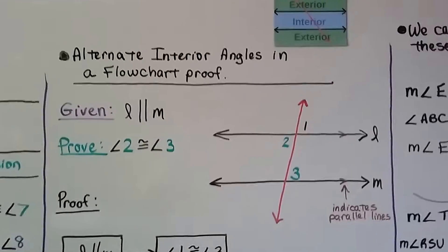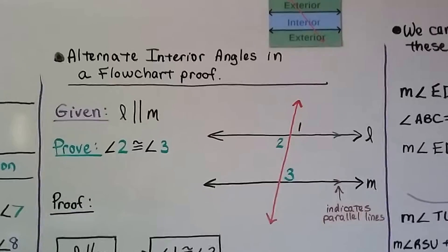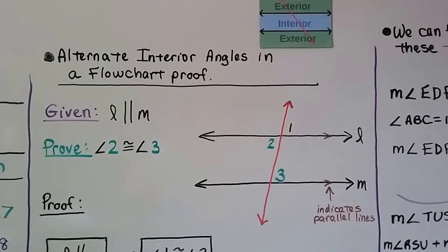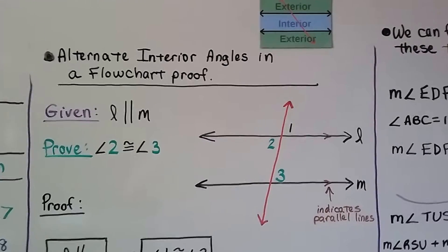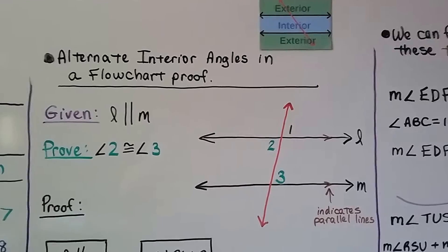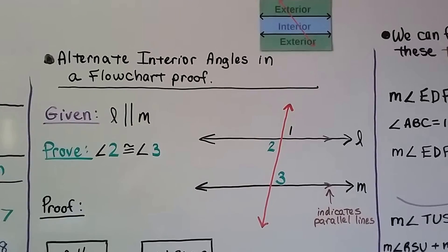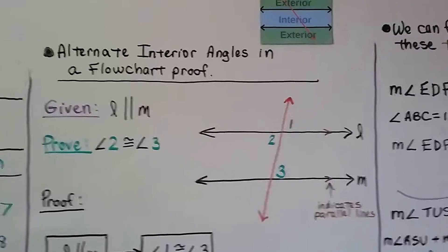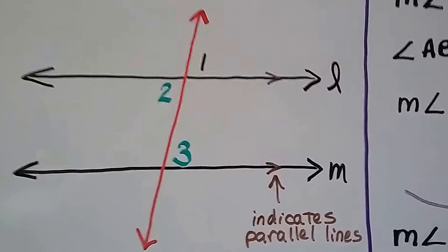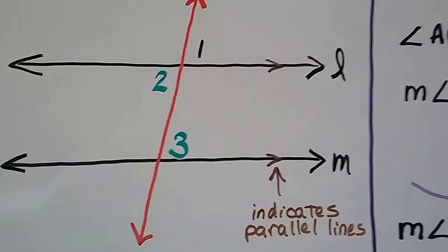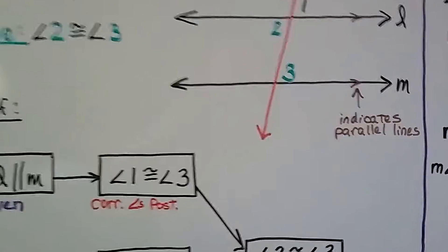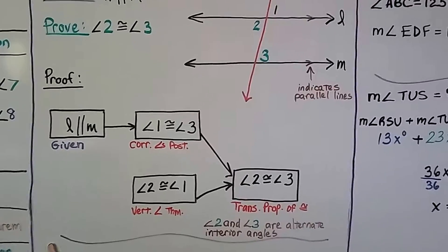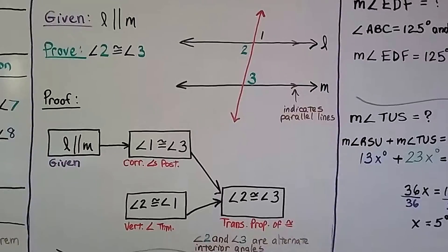Here's alternate interior angles in a flowchart proof. We have given that line L is parallel to line M. We need to prove that angle 2 is congruent to angle 3. We can see they're in the interior, 2 and 3, and they're on opposite sides of the transversal. You can also see our little marks here showing that they're parallel lines. So here's our flowchart proof. We've got line L is parallel to line M — that's given.